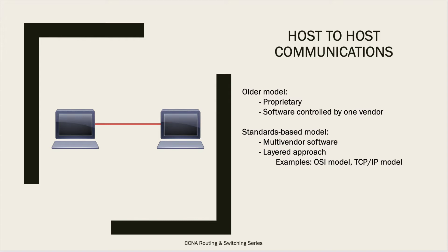The layered model standardizes network components, allowing different vendors to provide solutions for each separate layer. It simplifies learning about different components, and ensures that endpoints and devices are interoperable so you can communicate between different types of devices. The two examples of the standard-based model we're going to look at are TCP/IP and the OSI model.